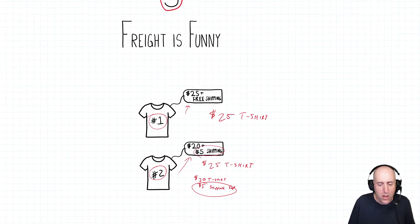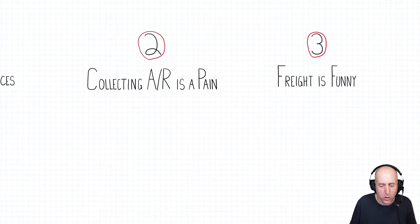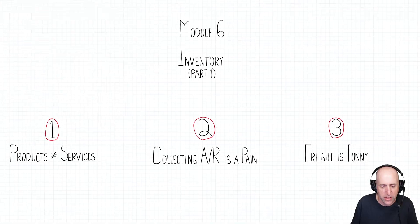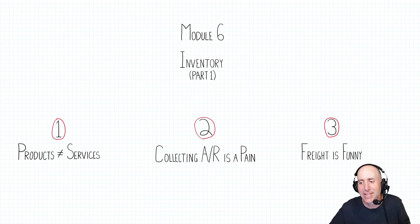So those were three quirky concepts that are going to come into our journal entries for chapter six. The best way to learn accounting is to do examples, and we got lots of them coming. I can't wait to get started. See you in the next video. Thanks for watching.